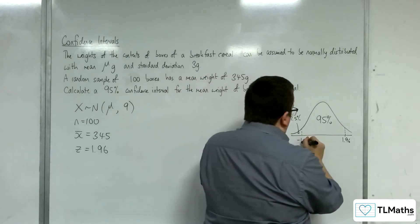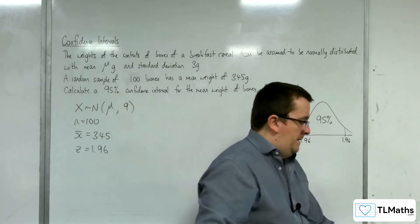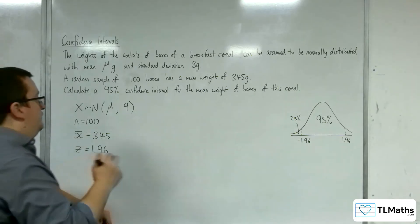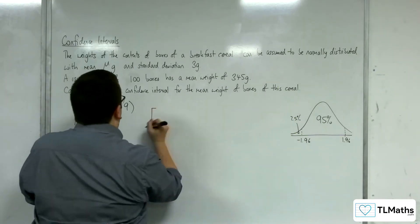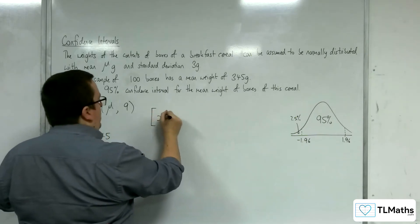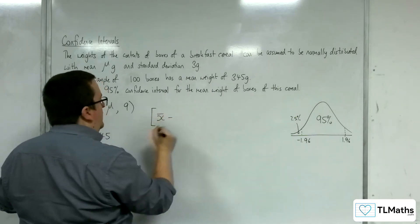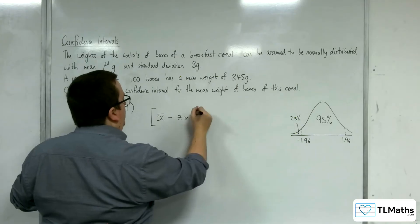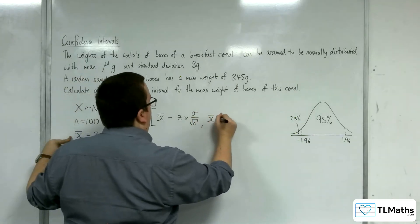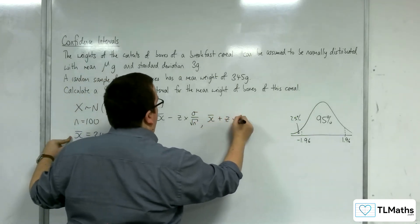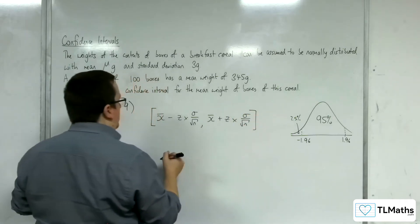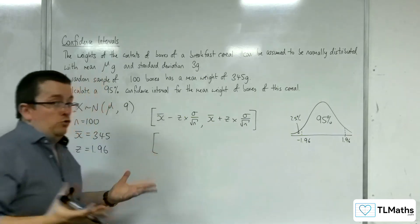That lower value will be minus 1.96. The confidence interval will be the mean. If we write it down: x bar minus z times sigma over root n (the standard error), and x bar plus z times sigma over root n (the standard error). That's the formula we need to remember.